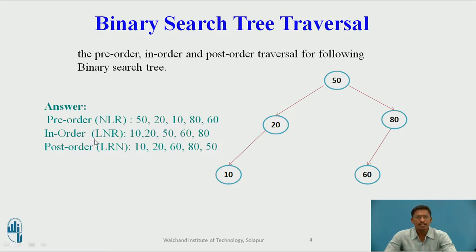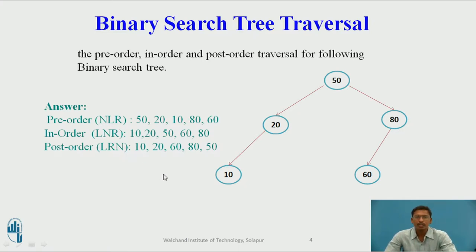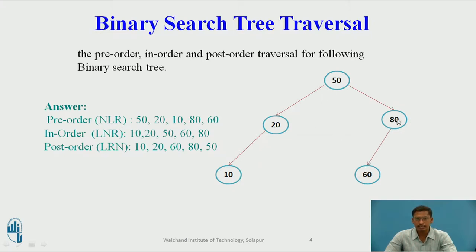In in-order traversal, first we traverse the left subtree, then we visit the node or root, and then we traverse the right subtree. In post-order traversal, first we traverse the left subtree, then the right subtree, and at last we visit the root. For example, given a binary search tree, the pre-order traversal is 50, 20, 10, 80, 60; in-order is 10, 20, 50, 60, 80; and post-order is 10, 20, 60, 80, 50. Note that the root is visited last in post-order and first in pre-order.